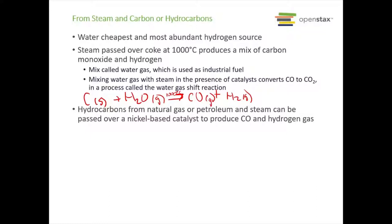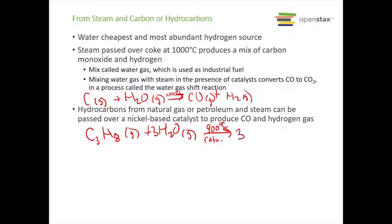One example is propane, which has the formula C3H8. We take propane gas with water at 900 degrees Celsius and a catalyst, and we get carbon monoxide gas and hydrogen. So this is our first method of making hydrogen gas.